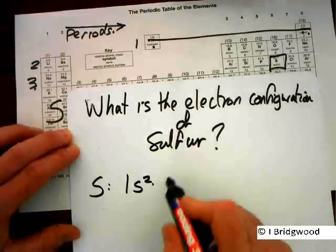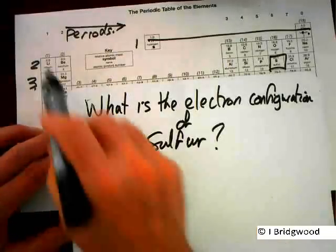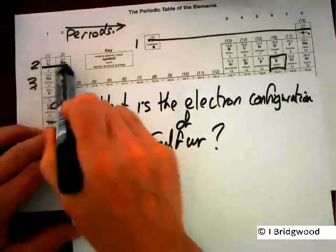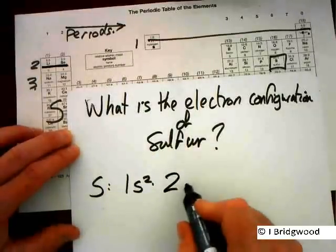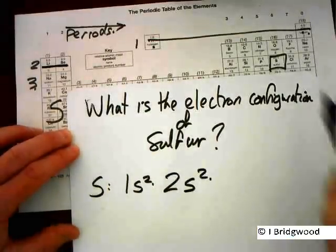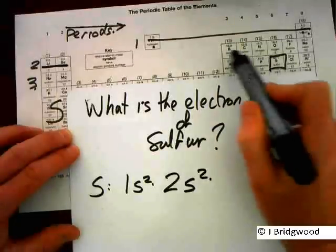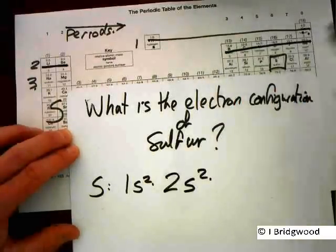On to the second period, going from lithium to beryllium takes us through the S block, 2S2. On to the P block, through six.